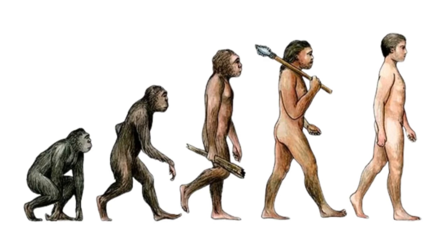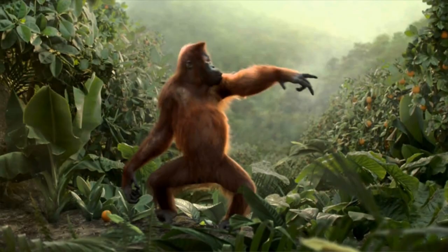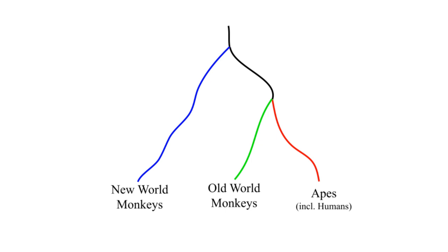According to the theory of evolution, you used to be a monkey. That's not right. For one thing, you still are a monkey. It's impossible to define monkey in a way that doesn't also include apes. Also, it's not you. The Tree of Life doesn't include specific organisms as much as genetic lines.